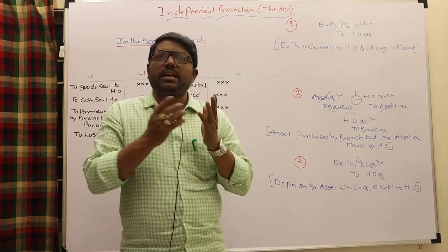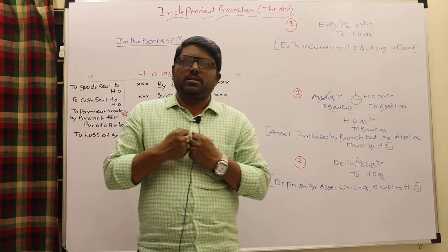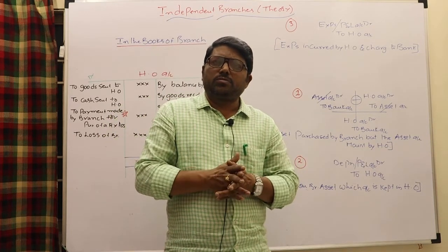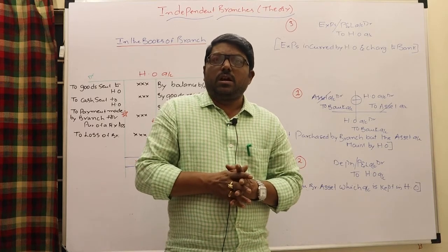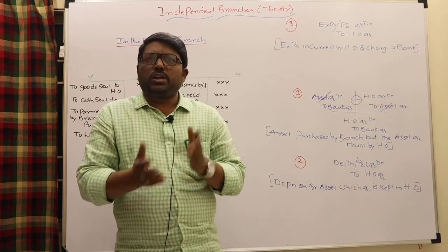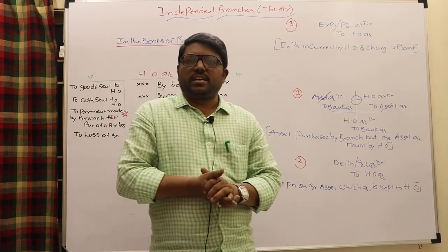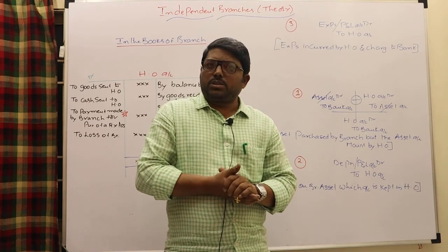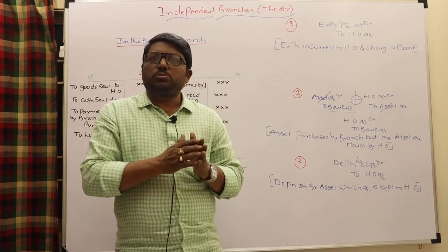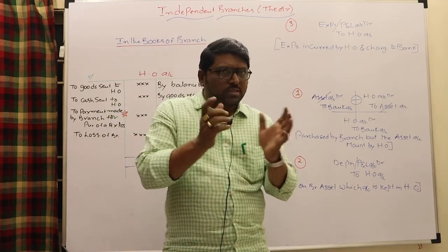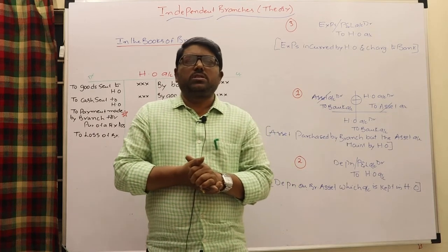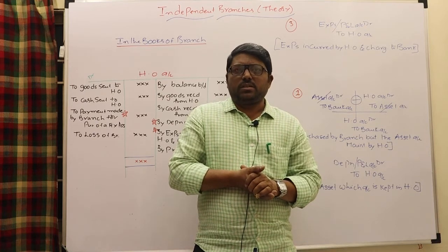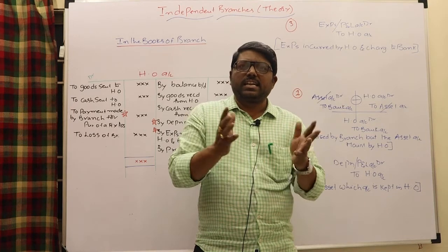Even in independent branches, the branch maintains a head office account and the head office maintains a branch account. In the head office books, the branch appears like a debtor, because sales are made by the branch and money is to be collected from it. In the branch books, the head office always appears like a creditor. Both accounts carry mirror amounts — whatever the branch has to pay to the head office is the same amount the head office expects to collect.